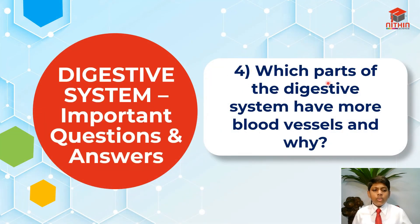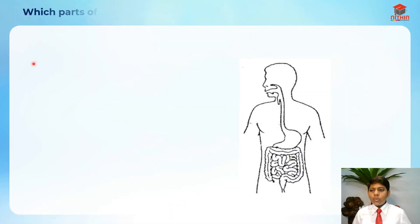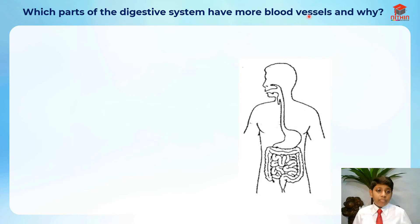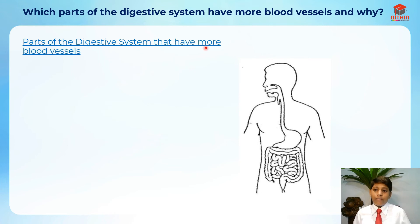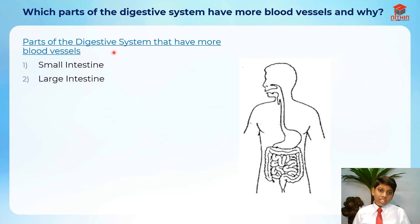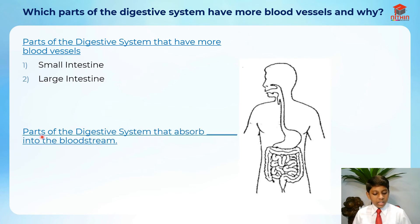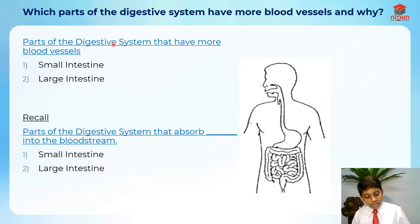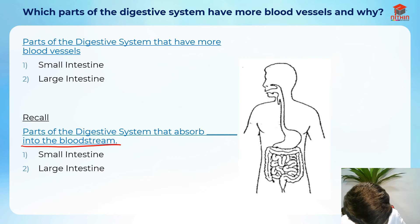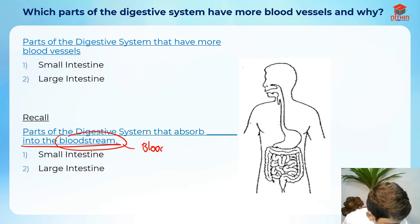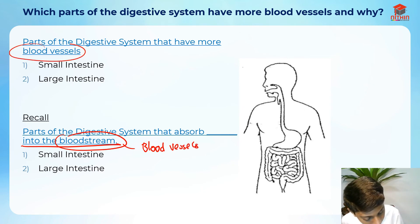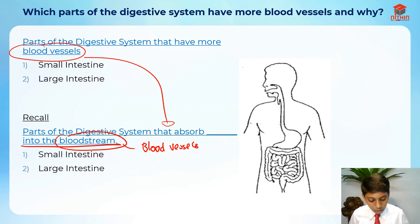Question 4: which parts of the digestive system have more blood vessels, and why? The parts that have more blood vessels are the small intestine and the large intestine — because that is where things are absorbed into the bloodstream. The parts that absorb into the bloodstream are the small intestine and large intestine, and the bloodstream contains blood vessels.